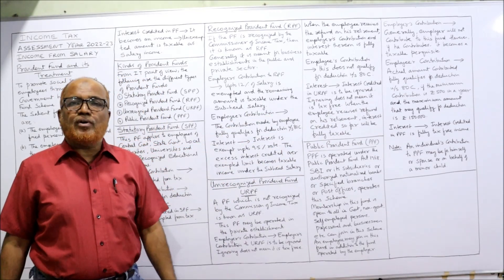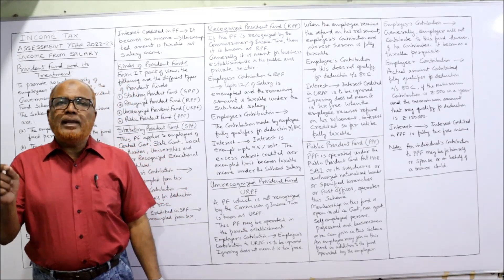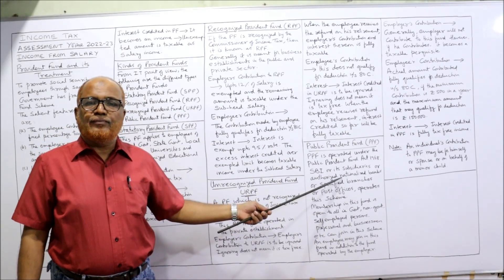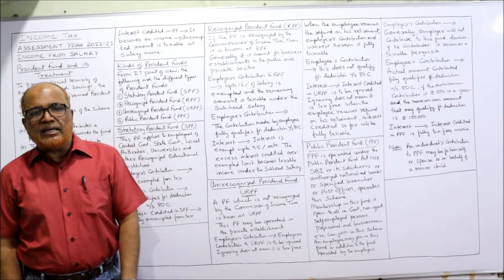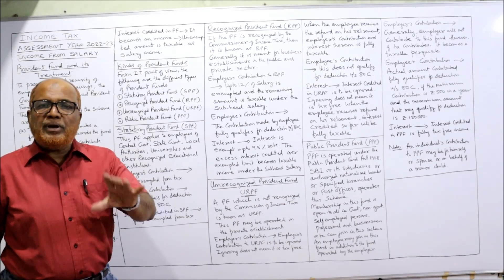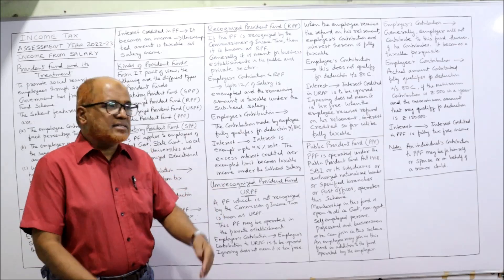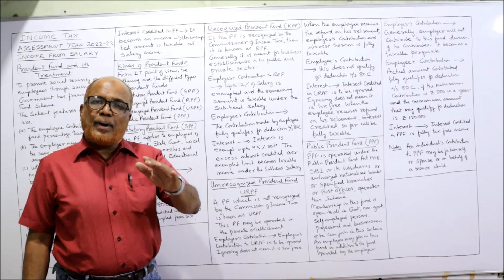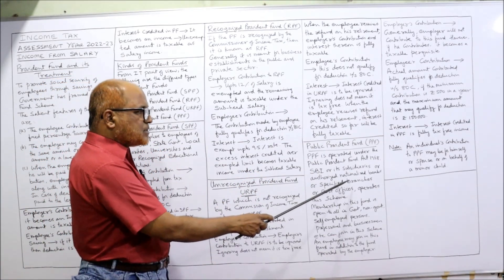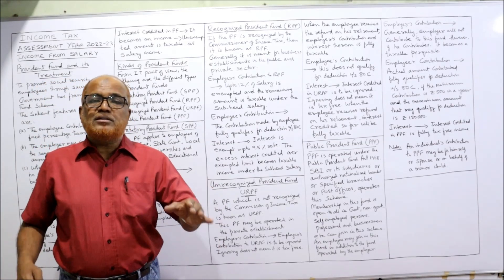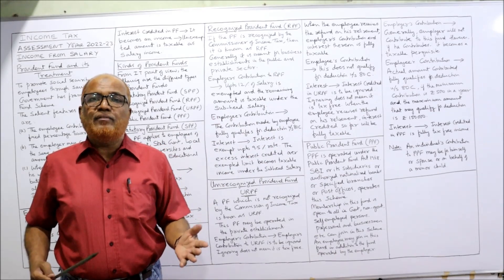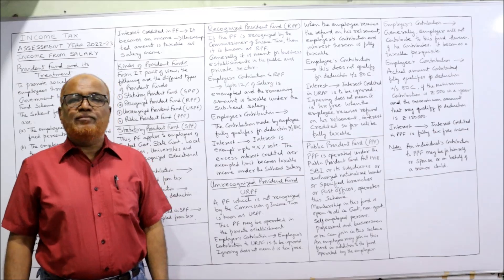Public Provident Fund (PPF) is a provident fund open to all. It is operated under the Public Provident Fund Act, 1968. The PPF account can be opened at State Bank of India or its subsidiaries, authorized nationalized banks, or specified branches of post offices. Anybody can go to a post office and open a PPF account, deposit the amount, and get the benefit of tax reduction.